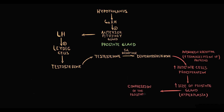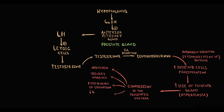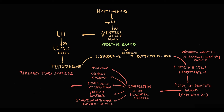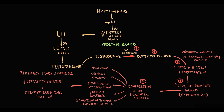As a result, the prostate gland enlarges and compresses the prostatic urethra. Compression of the urethra causes lower urinary tract symptoms such as nocturia, urinary urgency, increased frequency of urination, decreased stream caliber, and sensation of incomplete bladder emptying. All these symptoms can significantly affect quality of life. The higher the production of dihydrotestosterone, the more severe and disturbing the clinical symptoms become.